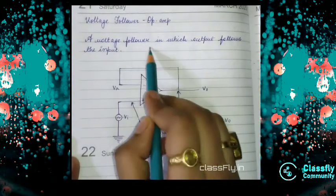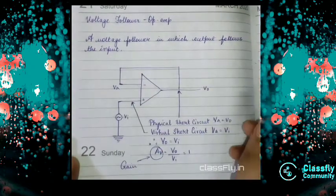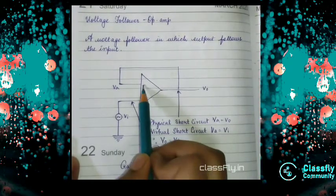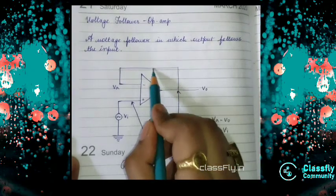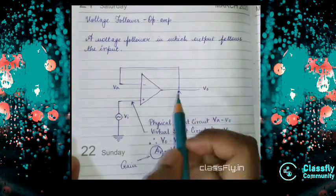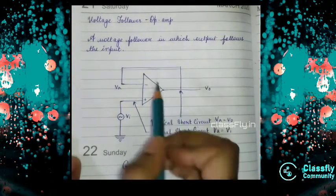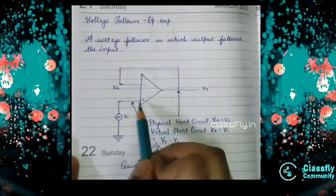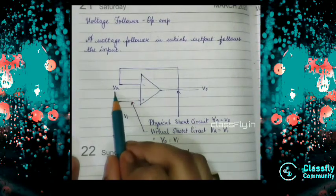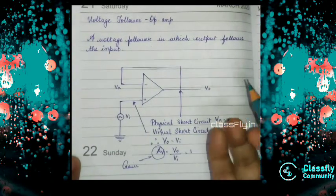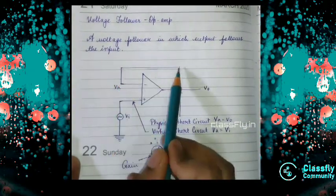Voltage follower is a circuit in which output follows the input. Whatever will be the input, that only the output will be. You can see here the VA is short-circuited with the V0 at the inverting terminal. The wire has been short-circuited with the output. So VA and V0 will be equal because of the physical short circuit, whereas VI will be equal to VA due to the virtual short circuit. Correspondingly, V0 will be equal to VI.